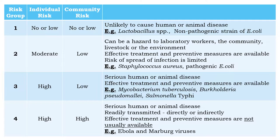Risk group 2 organisms have a moderate risk to the individual and a low risk of transmission to the community. They can infect laboratory workers, the community, livestock or the environment. However, effective treatment and preventive measures are readily available. Therefore, the risk of spread of infection is limited. Examples are Staphylococcus aureus and pathogenic E. coli.